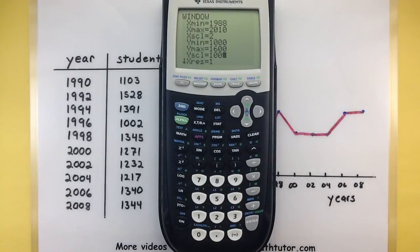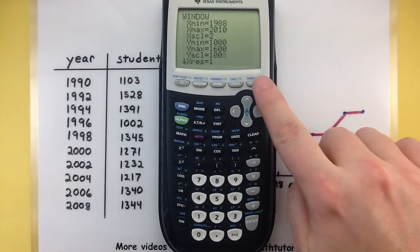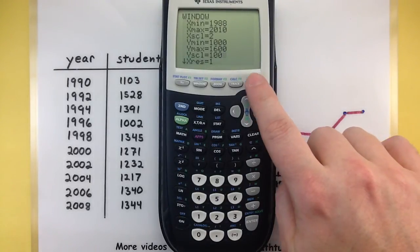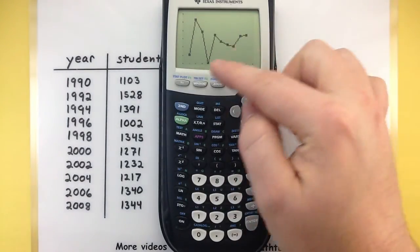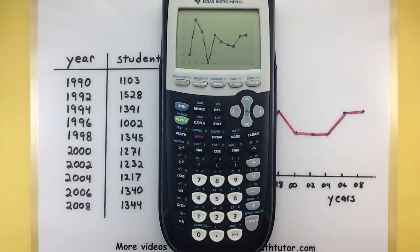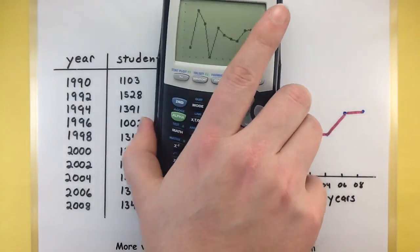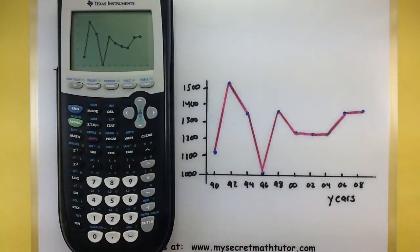I think we're in good shape, we have our stat plots, we have a window. Let's go ahead and take a peek at this graph. Finally go ahead and hit that graph button at the very end. Perfect, as you can see it's taken all of those data points, it's put lines in between them and we have a wonderful line chart. Let's compare this with what we did by hand in a different video to make sure that this is an accurate chart.